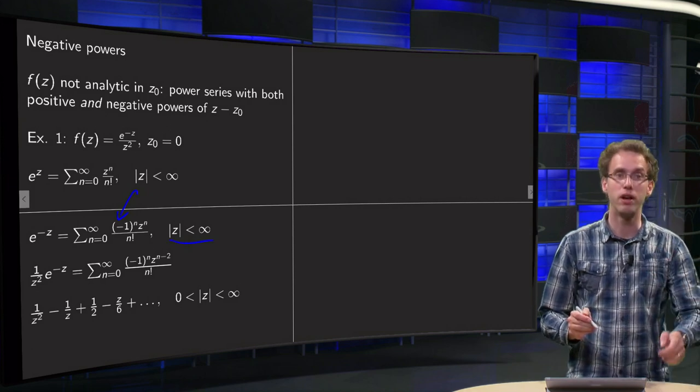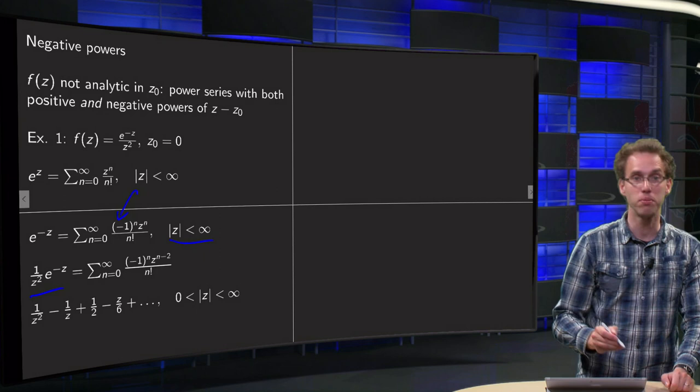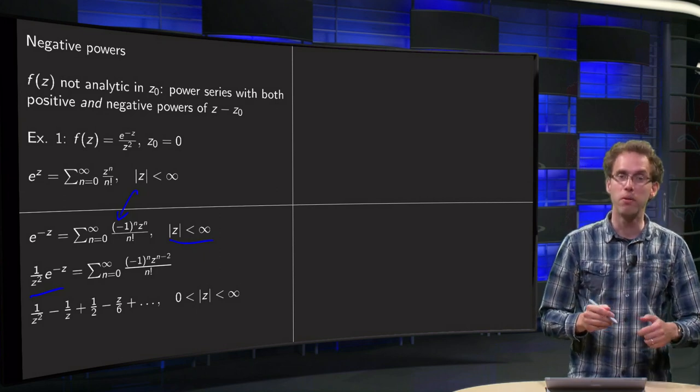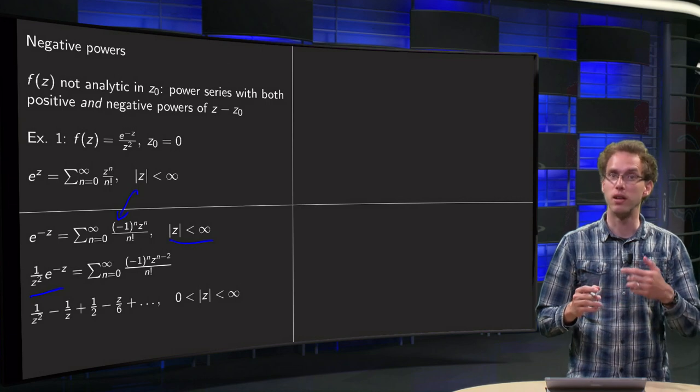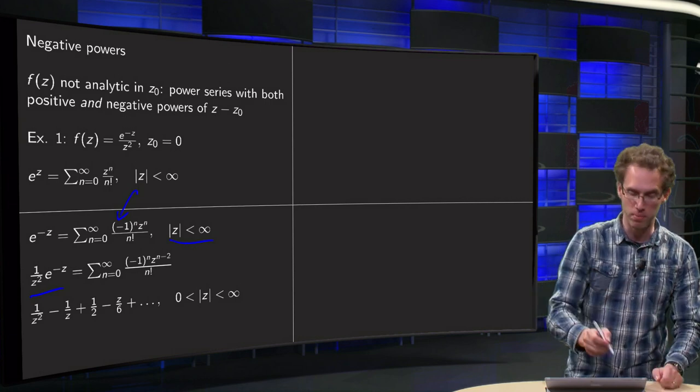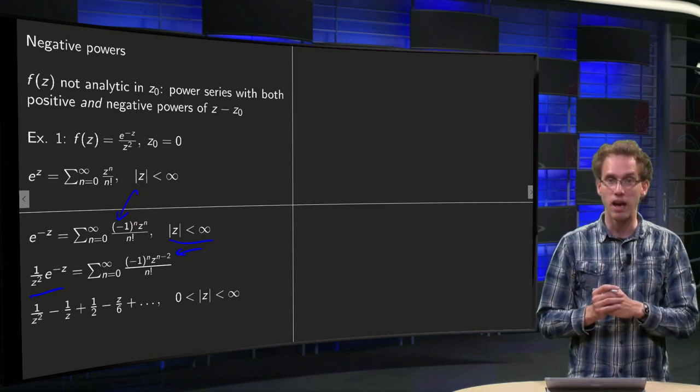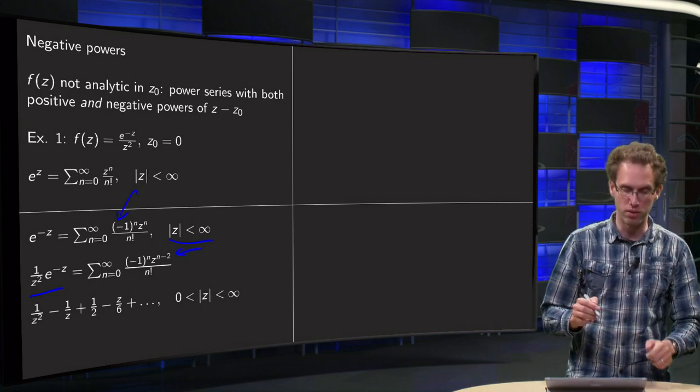And then you can multiply by 1 over z squared because it is still in powers of z. But now it means that you get z to the power n times z to the power minus 2 equals z to the power n minus 2. So if you write down the first few terms it would be 1 over z squared minus 1 over z plus 1 half etc.